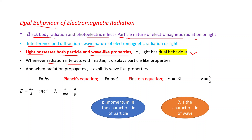Whenever radiation interacts with matter, it displays particle-like properties, and when radiation propagates, it exhibits wave-like properties. Key equations: E = hν (Planck's equation), E = mc² (Einstein's equation correlating energy and mass), and c = νλ, from which ν = c/λ.